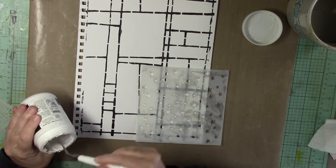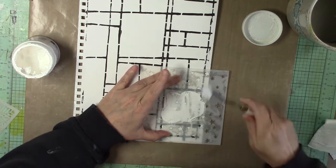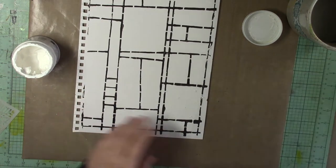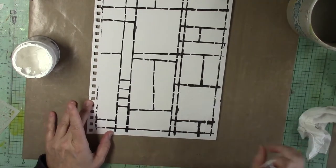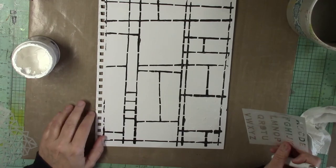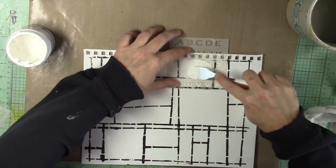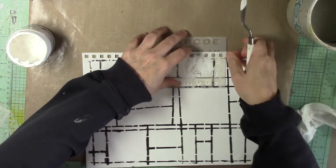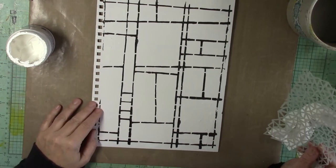I'm using super heavy gesso and some other stencils that I have just to create more interest and texture on my art journal page. The super heavy gesso works really well for that—it creates a nice effect. I'm applying it to different varying squares with various stencils from my stash.